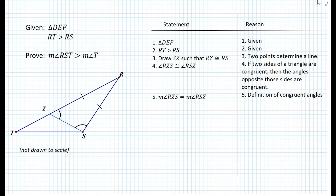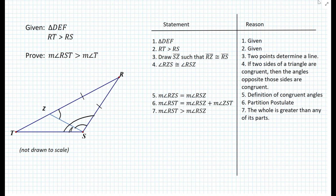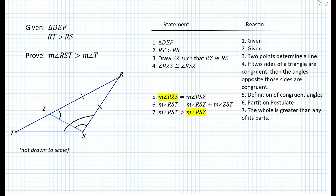Let's convert from congruent angles to equal in measure, since we're dealing with inequalities and can only compare measures. The measure of angle RST is composed of the measure of angle RSZ plus the measure of angle ZST, as shown in the diagram. We can compare measure of angle RST with measure of angle RSZ, and we know that the measure of angle RST is greater than the measure of angle RSZ, because the whole is greater than any of its parts.